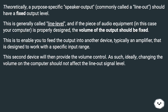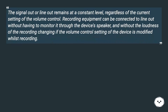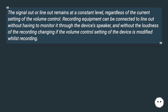As such, ideally, changing the volume on the computer should not affect the line-out signal level. The signal out or line-out remains at a constant level, regardless of the current setting of the volume control. Recording equipment can be connected to line-out without having to monitor it through the device's speaker, and without the loudness of the recording changing if the volume control setting of the device is modified whilst recording.